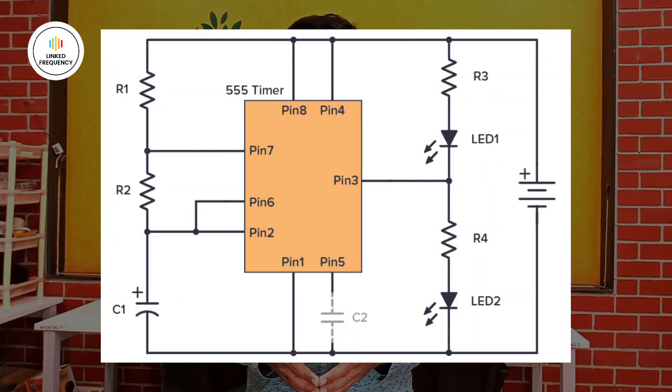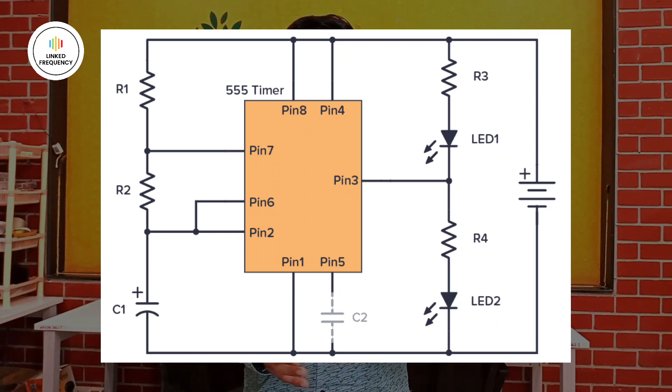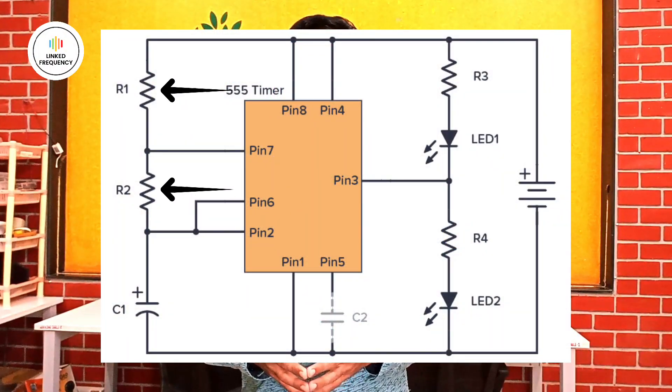Using the 555 timer IC, we can configure three different architectures: astable multivibrator, bistable multivibrator, and monostable multivibrator. The capacitor in this circuit is responsible for controlling the T-on and T-off cycle. Both the capacitor and resistor are responsible for the timing. This is one of the most widely used application circuits in digital electronics.